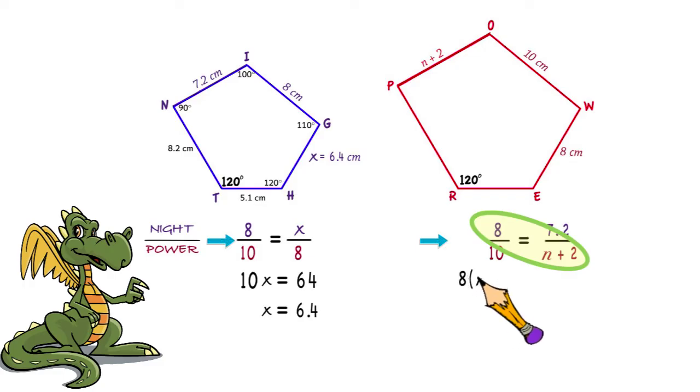That is 8 times the quantity n plus 2 equals 72. Now, don't forget to use the distributive property to remove the parentheses. That gives us 8n plus 16 equals 72. 8n equals 56. n is equal to 7. And side PO would be 9 centimeters.